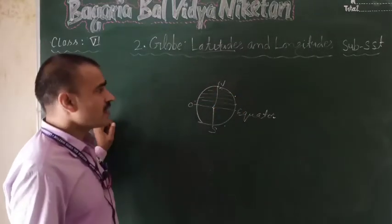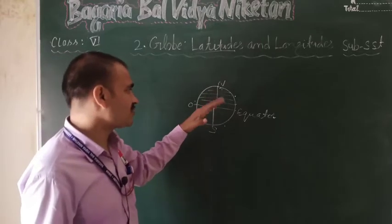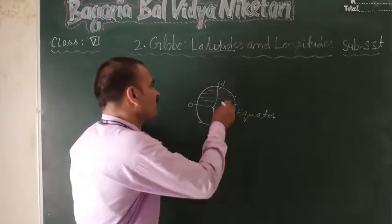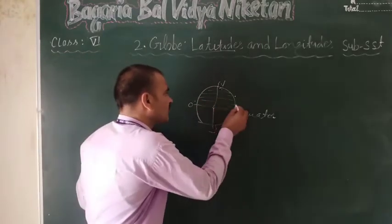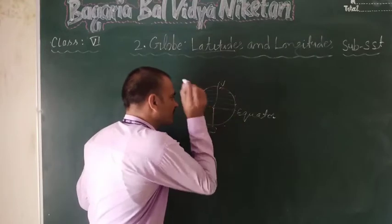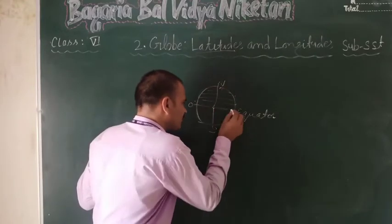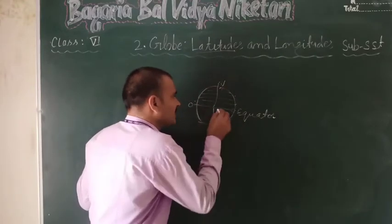Regarding latitude, on the north side we have the Northern Hemisphere, and on the south side we have the Southern Hemisphere.